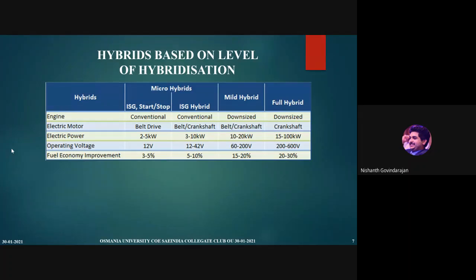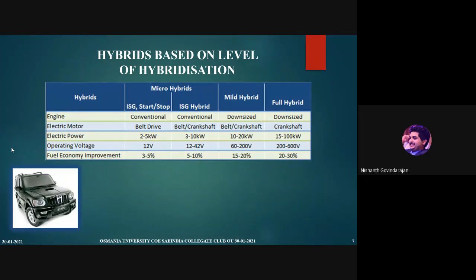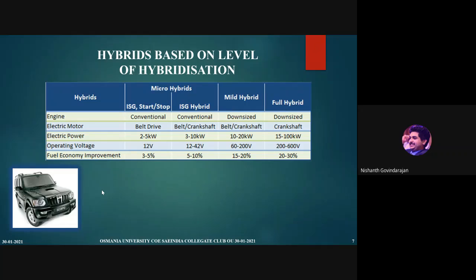What does the start-stop system mean? When the car comes to a stop at traffic lights, the car is in neutral and the start-stop system is switched on by the driver — the car automatically stops, saving fuel by not idling at the traffic stop. Then when you press the clutch as the signal turns green, the car immediately starts and you go on with your journey.